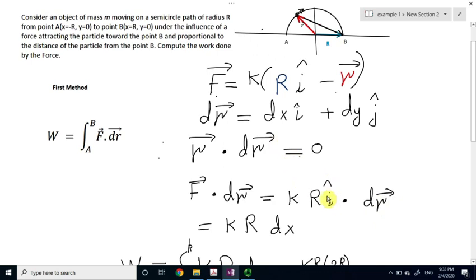But, dr, because this is only the x component we have here, so we can also only take the x component of dr. And, in an easy way, you can find that the force dot dr equals the constant k, capital R, the radius, times dx.